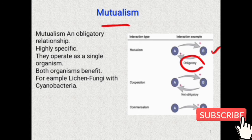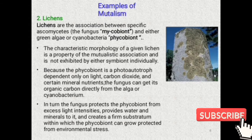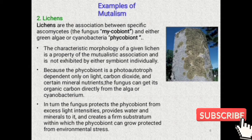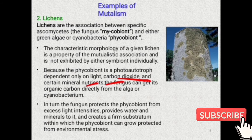The first type of positive interaction is mutualism. As the name indicates — mutual — both organisms will get benefit. This is an obligatory association; both organisms remain as a unit. For example, the association of lichens: in lichens the phycobiont, which is the alga, and the mycobiont, which is the fungi, remain closely together.